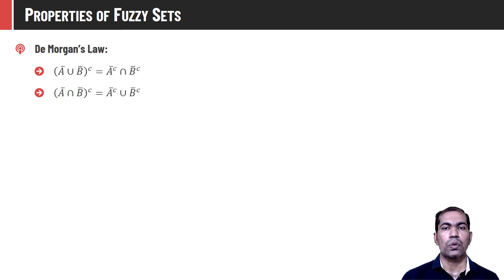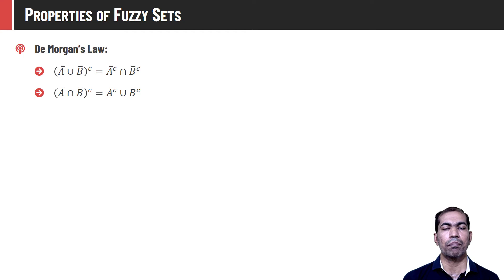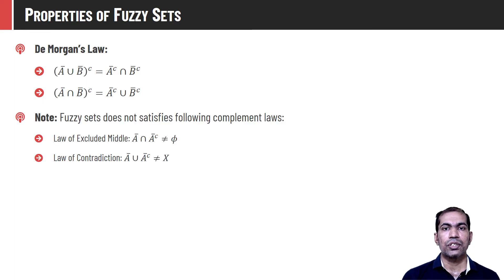De Morgan's law is also true for fuzzy sets — that is, the complement of (A union B) is the same as (A complement intersection B complement), and the complement of (A intersection B) is the same as (A complement union B complement). All these properties have been discussed with examples for the crisp set, which is why examples are not taken here. Except these two properties, all properties of crisp sets are also true for fuzzy sets.